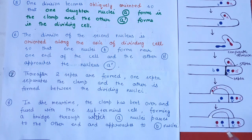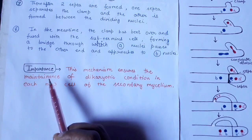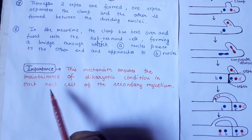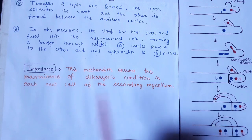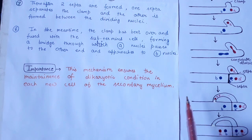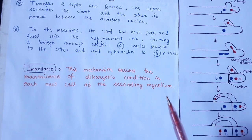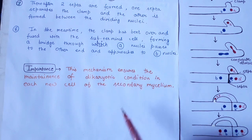This mechanism ensures the maintenance of the dicariotic condition in each new cell of the secondary mycelium. When the secondary mycelium divides, the dicariotic condition is maintained through this process of clamp connection in the members of Basidiomycetes.